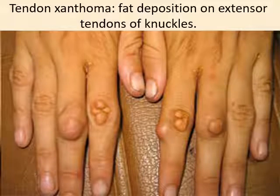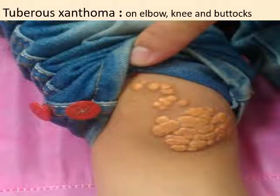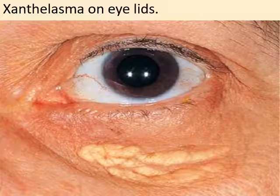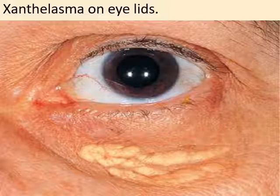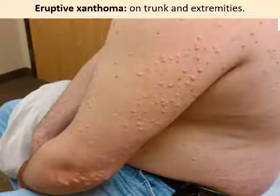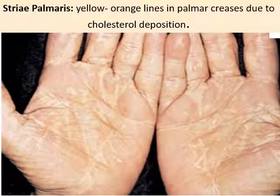This figure shows tendon xanthoma, which is a fat deposition on the extensor tendons. This is a tuberous xanthoma, present in the elbow and may be present on the knees. This figure shows xanthelasma on the eyelids. This figure shows eruptive xanthoma, present on the trunk and extremities. This figure shows palmar xanthoma, which are yellow-orange lines in palmar creases due to lipid deposition.